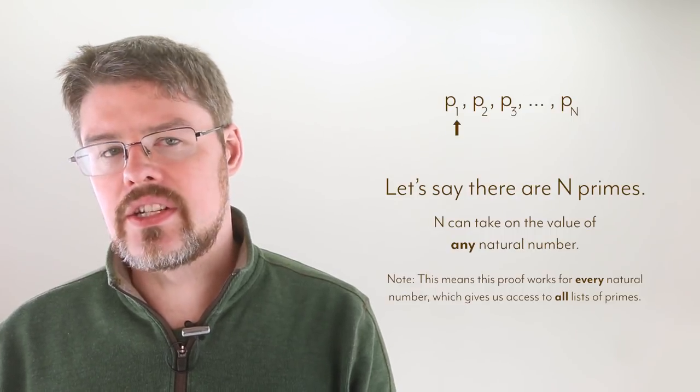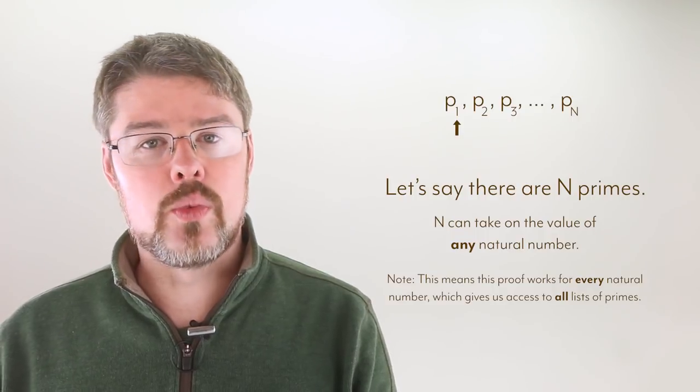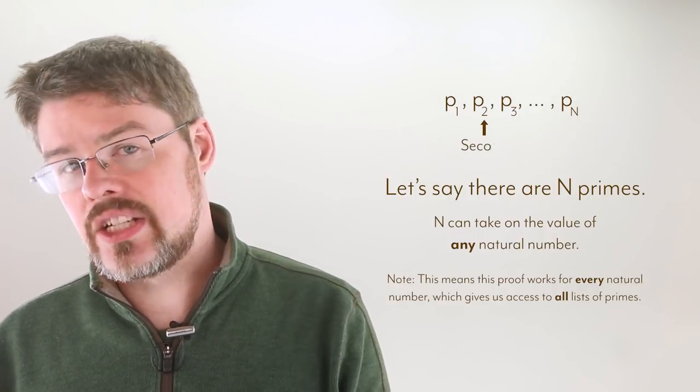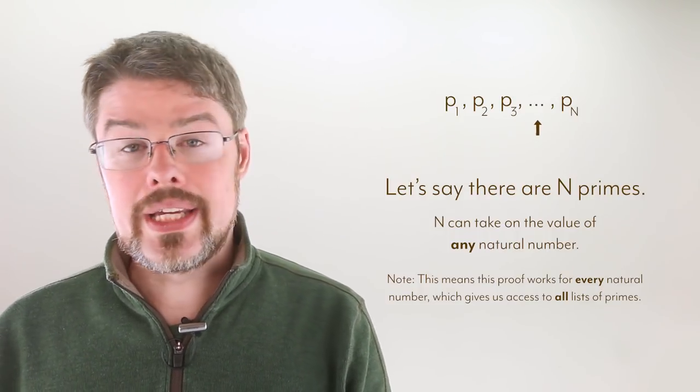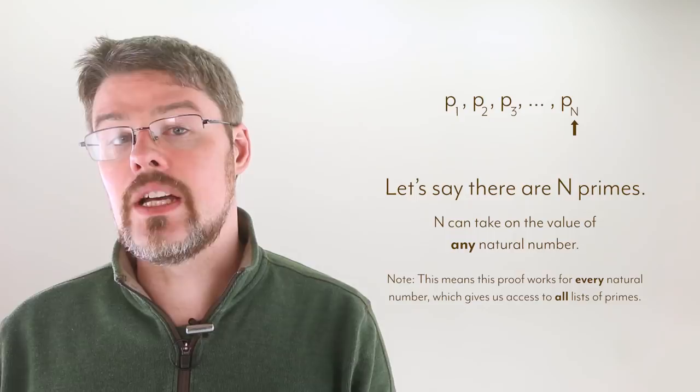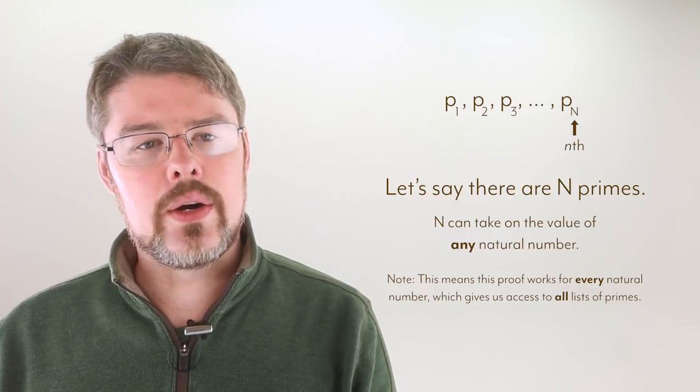The little number next to the p is called a subscript. To understand what it's saying, p sub 1 is the first prime, p sub 2 is the second prime, p sub 3 is the third prime, and so on. When we get to the last one, we say that p sub n is the nth prime. We can then write them all out as a list, like so. And we've captured all of them. There aren't any prime numbers that aren't on this list. Seems fine, right?